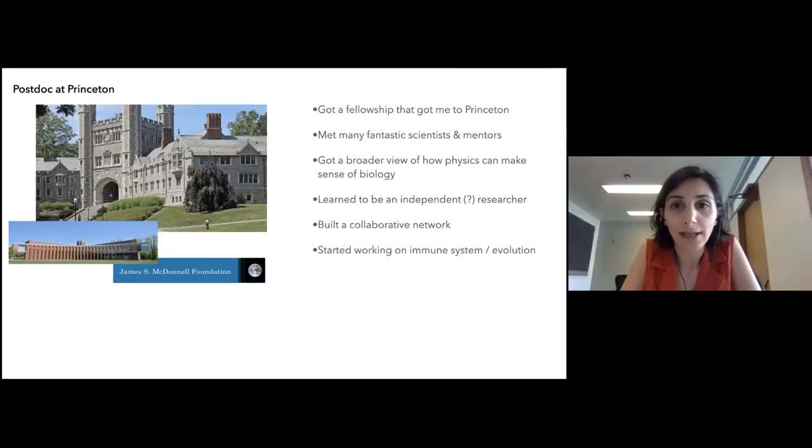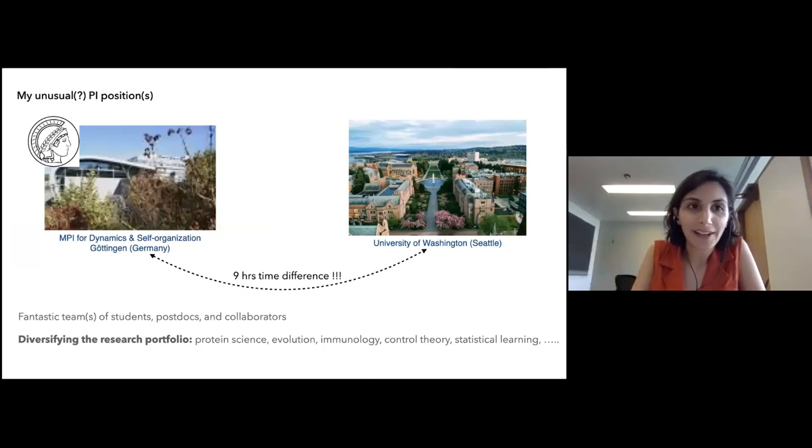After PhD I got a fellowship that got me as a postdoc to Princeton and that was an amazing opportunity. I met many fantastic scientists and mentors there, got a broader view of what biophysics means or physics of biological systems means across many different disciplines, and learned to be somewhat an independent researcher. I built a collaborative network and this was basically a thing I would recommend to anyone who wants to do interdisciplinary work—to start collaborating with people. I started thinking about immune systems in the context from an evolutionary point of view and that's one of the main research directions we're currently working on.